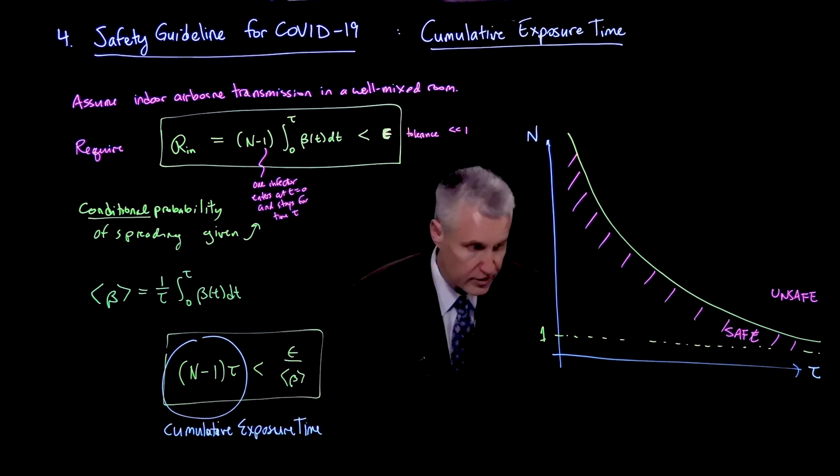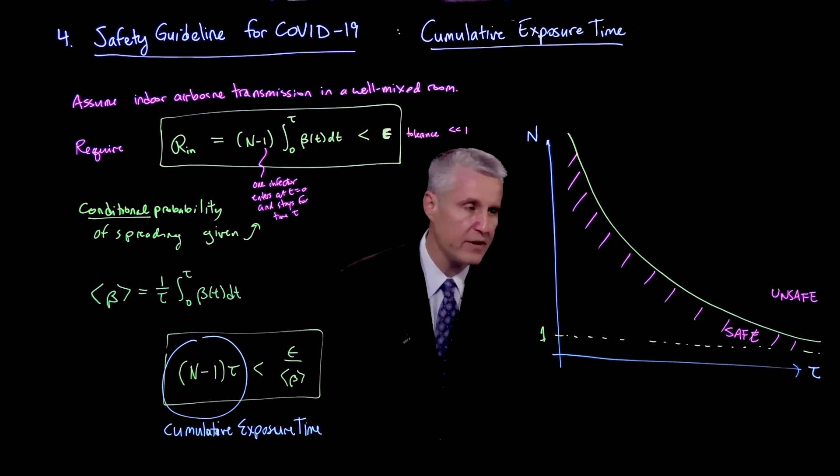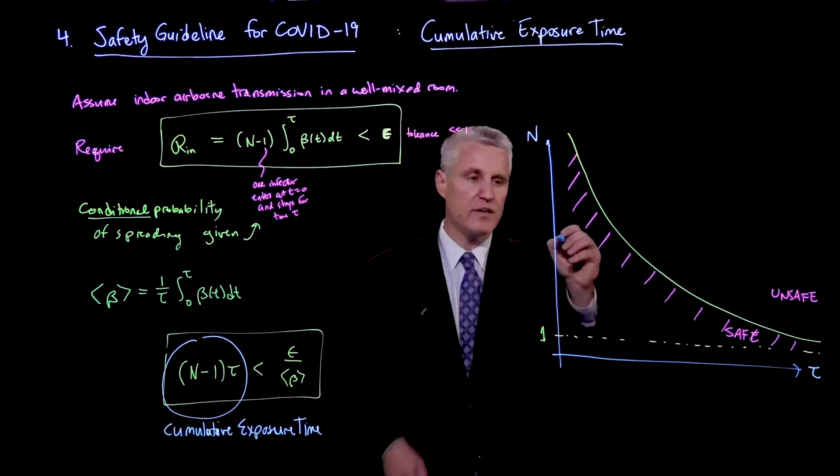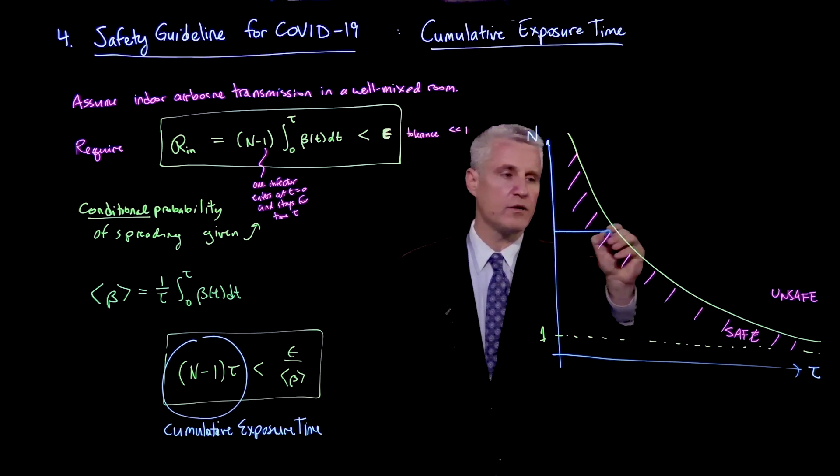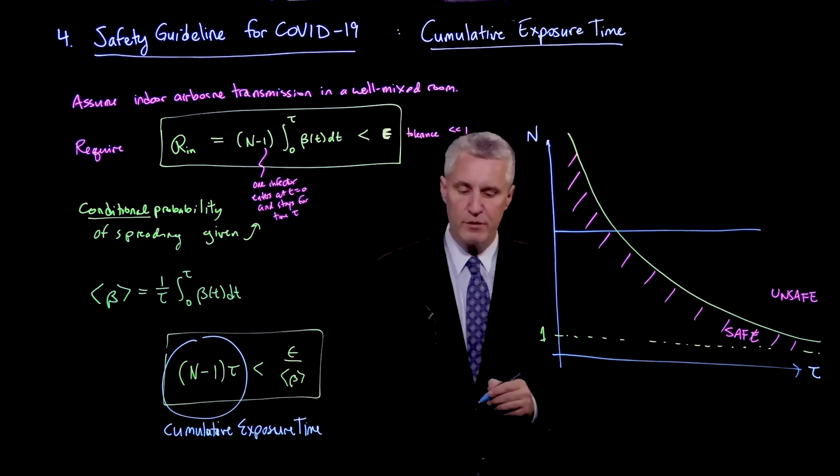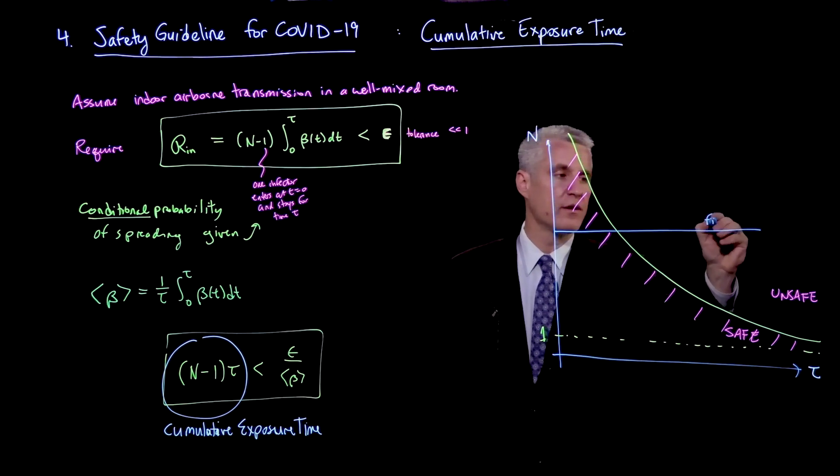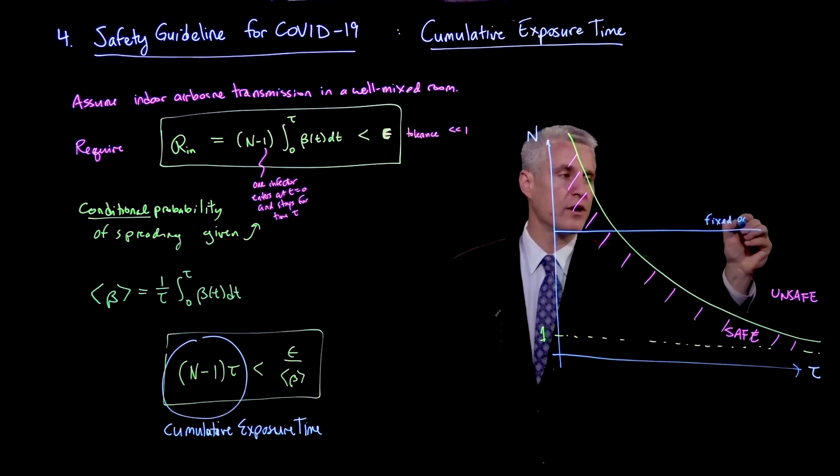And here you see a very fundamental problem that I was just alluding to, which is that if I put the standard guidelines on, for example, a limit on number of people. So this could be a fixed occupancy.